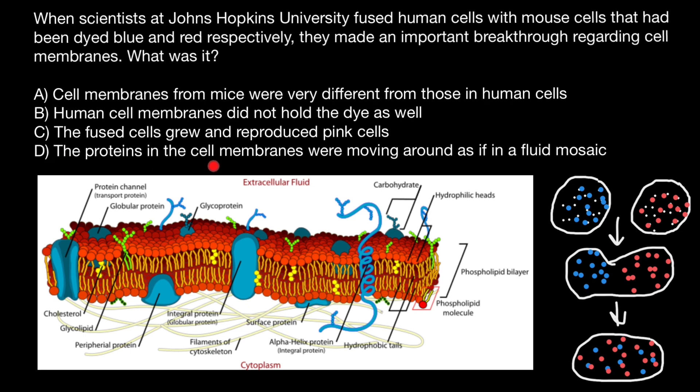Variant D: the proteins in the cell membranes were moving around as if in a fluid mosaic. This is the correct variant — this is what they proved with this ingenious experiment. So our choice is answer D. And that's all for today. Subscribe and see you in the next video. Goodbye.